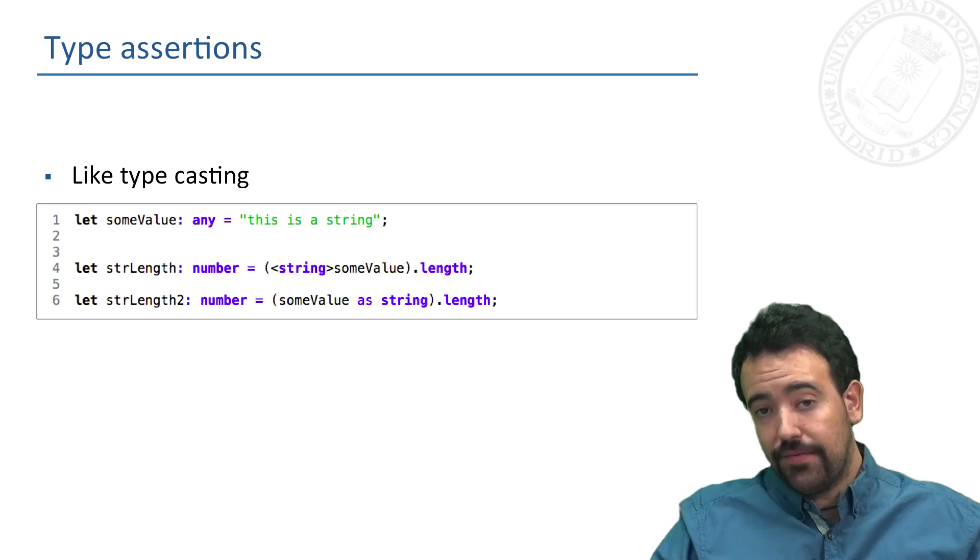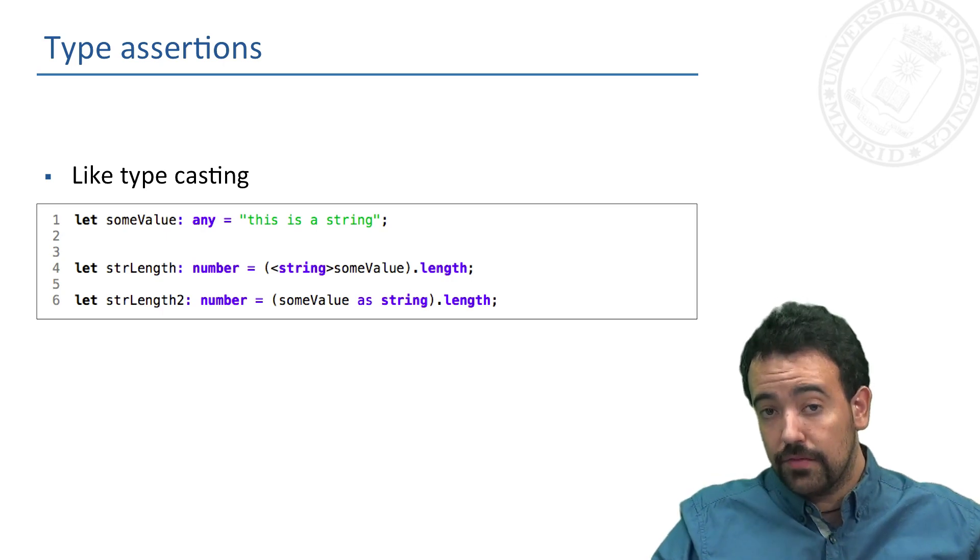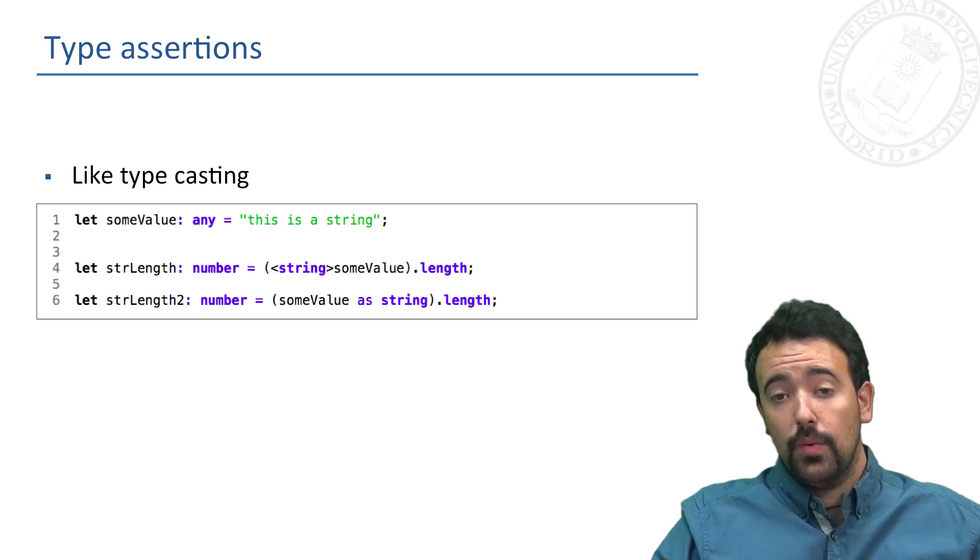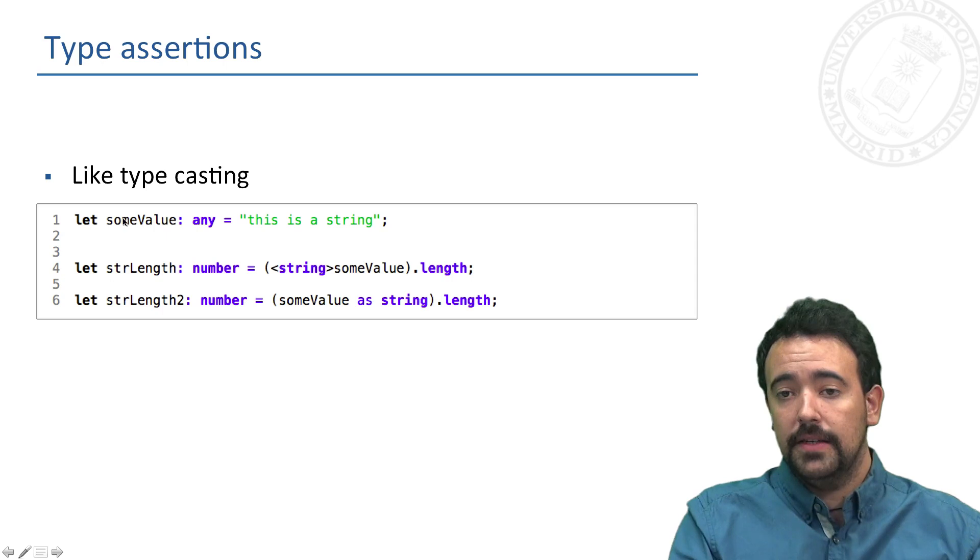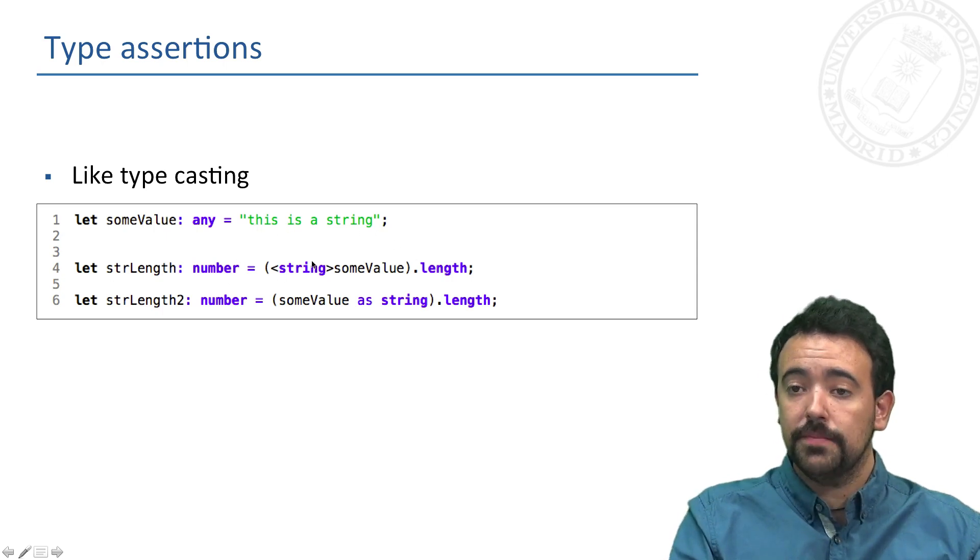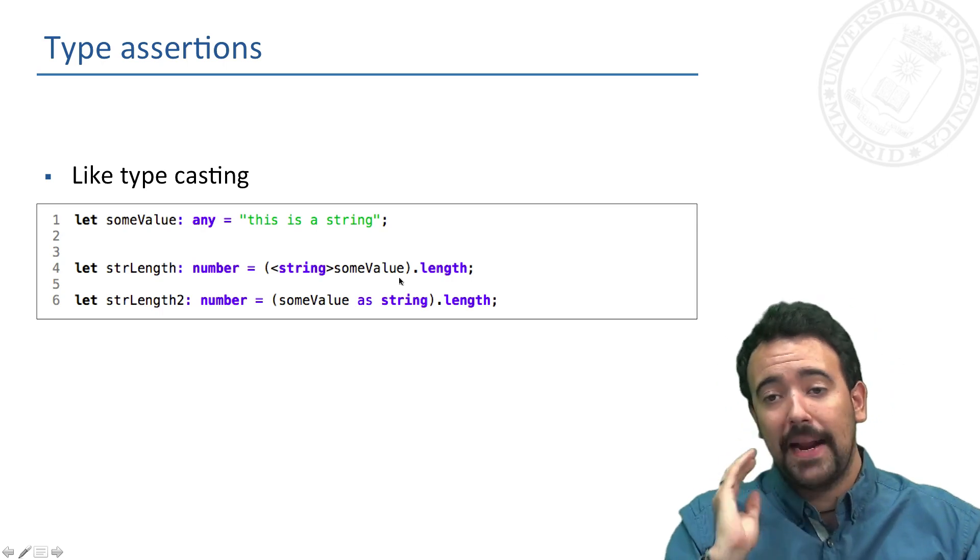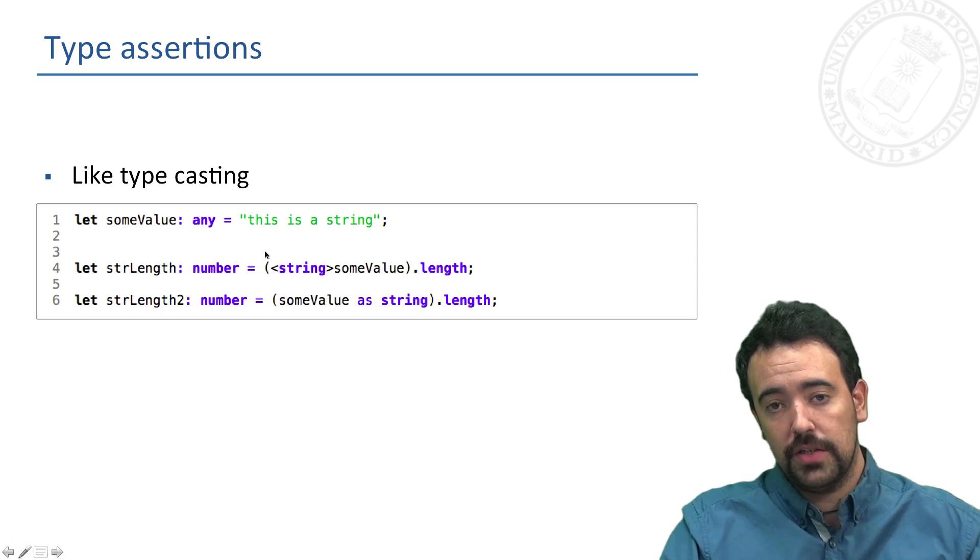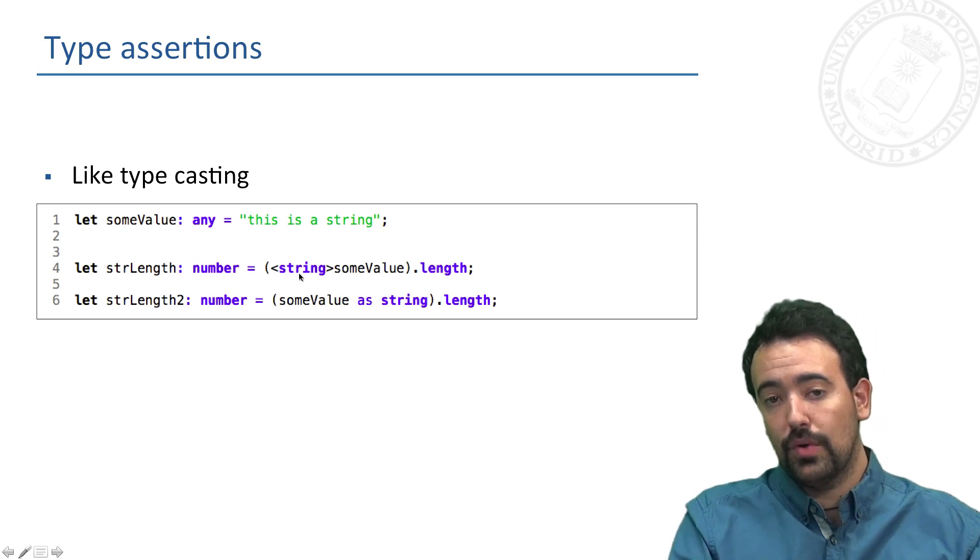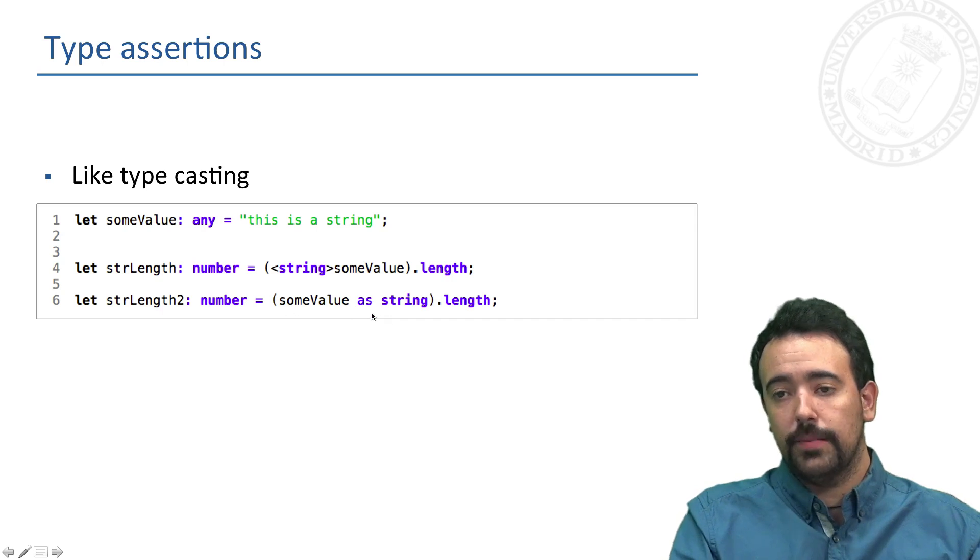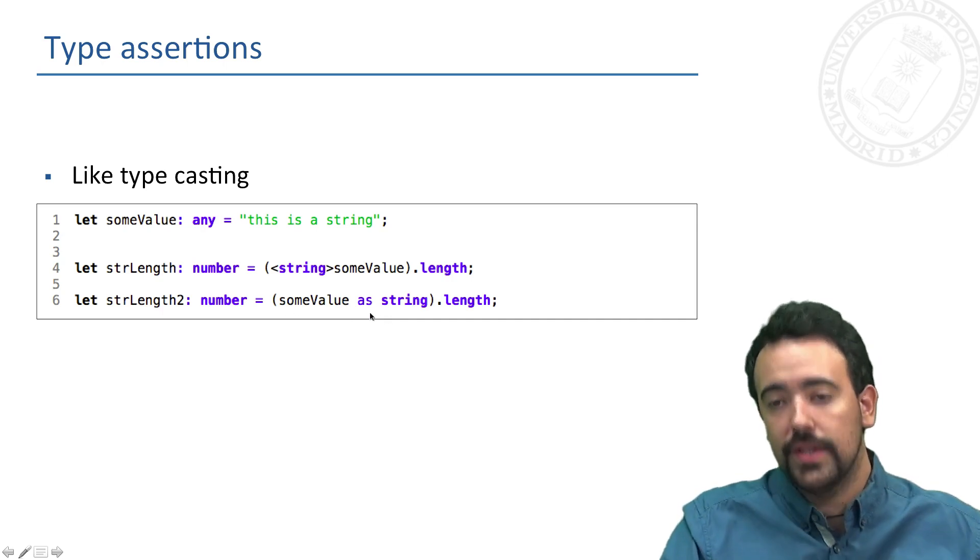Once we have defined a var of this type any, we can perform a kind of casting that in TypeScript is called type assertion. For instance, in this case we define a var that is of string type and we can cast this for being able to apply string methods to this variable. For instance, in this case we use this format specifying here the type we want to cast to, but we can also use this format for doing the same casting.